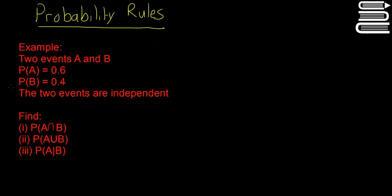There are two events A and B. The probability of A is 0.6, the probability of B is 0.4, and the two events are independent. We want to find P of A intersect B, P of A union B, and P of A given B.